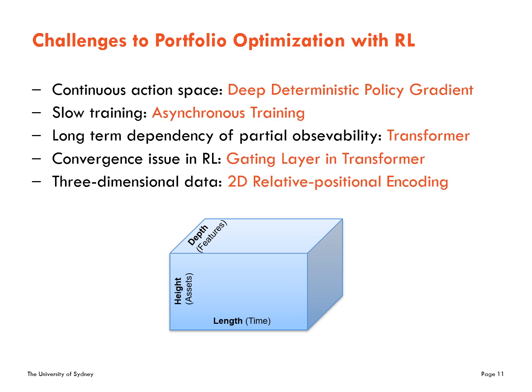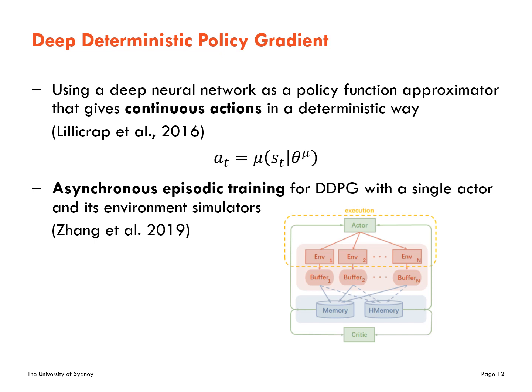To solve these problems, we used the following components. Deep Deterministic Policy Gradient (DDPG) for continuous action space, and asynchronous training to make it faster. DDPG uses a deep neural network as its policy function approximator and returns deterministic continuous actions rather than a probability distribution over possible actions. Transformers were used for historical data with some tweaks for stability, and 2D relative positional encoding was adopted for the three-dimensional data.